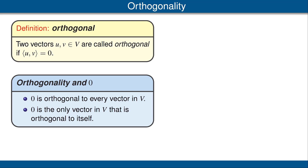Here are two simple properties of orthogonality. First, zero is orthogonal to every vector in V — that is, the inner product of any vector u with the zero vector equals zero, which is obvious from the definition. Second, zero is the only vector that is orthogonal to itself, because the inner product of a vector with itself equals zero if and only if the vector equals zero.